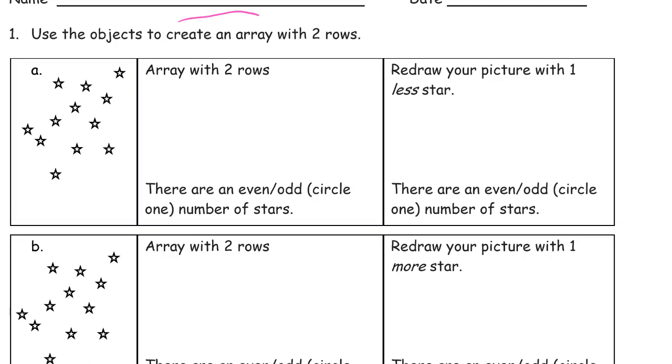Use the objects to create an array with two rows. So I need an array with two rows. First thing I want to find out is how many I can put in each row. So if I circle these in pairs, I'll know how many I can have in each row. That's my kind of trick for figuring this out.